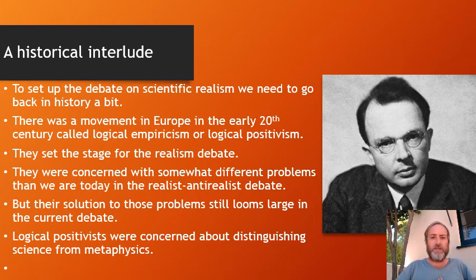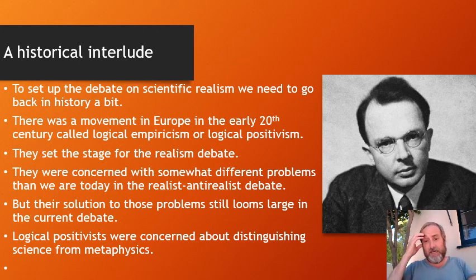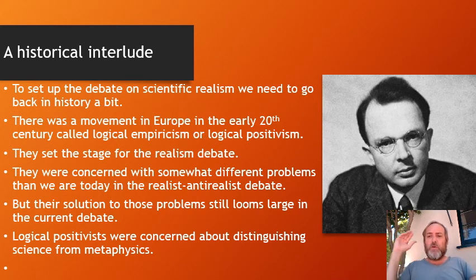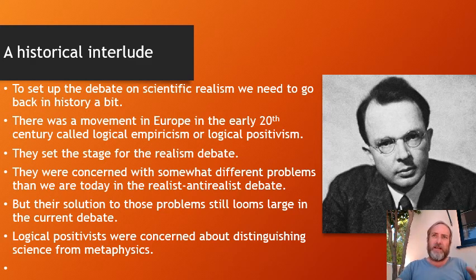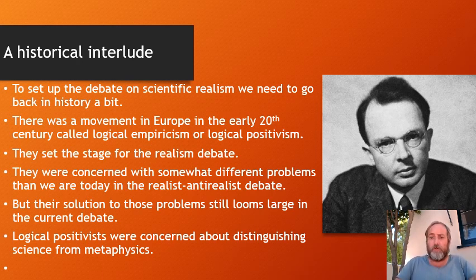This movement was largely in Vienna, in Europe, in the early 20th century — sometimes called logical positivism, same thing. They set up the stage for the contemporary realism debate. The problems they were concerned with are slightly different from those we'll discuss in the next couple of lectures, where we talk about the no-miracles argument and the pessimistic meta-induction. Those are mostly concerned about theory change — old scientific theories turn out to be wrong, we get better ones — and the debate asks: if our old ones were wrong, how do we know our new theories are right?